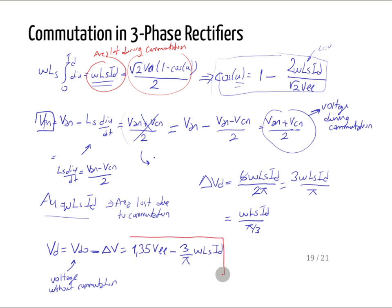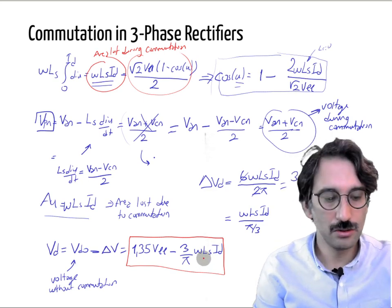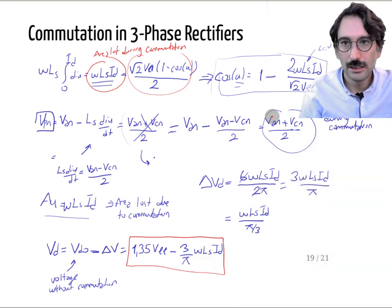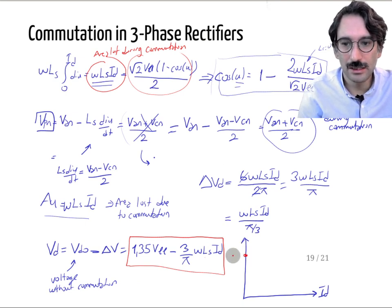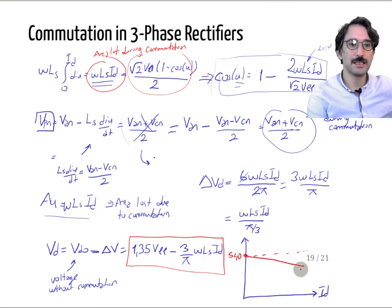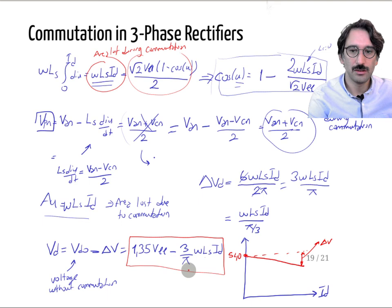This voltage reduction shows that Ls is typically constant in the grid, so as you draw more current the output voltage drops linearly. At zero current you get the ideal 540 V, but at higher currents the reduction due to grid inductance becomes significant — it grows with both the line impedance ω·Ls and the rated current ID.